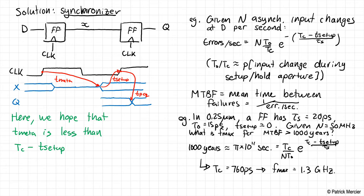That's pretty good — metastable points end up usually resolving pretty quickly, so designing synchronizers isn't that difficult in terms of specifications. However, synchronizers are notoriously easy to mess up for a variety of reasons; the textbook goes into a lot of detail on this. The bottom line is: by putting two flip-flops in a line, the chances that X doesn't resolve before the next rising edge is super low, provided clock frequency is reasonable. In 0.25 micron — an ancient technology — we calculate 1.3 GHz, which is very reasonable.